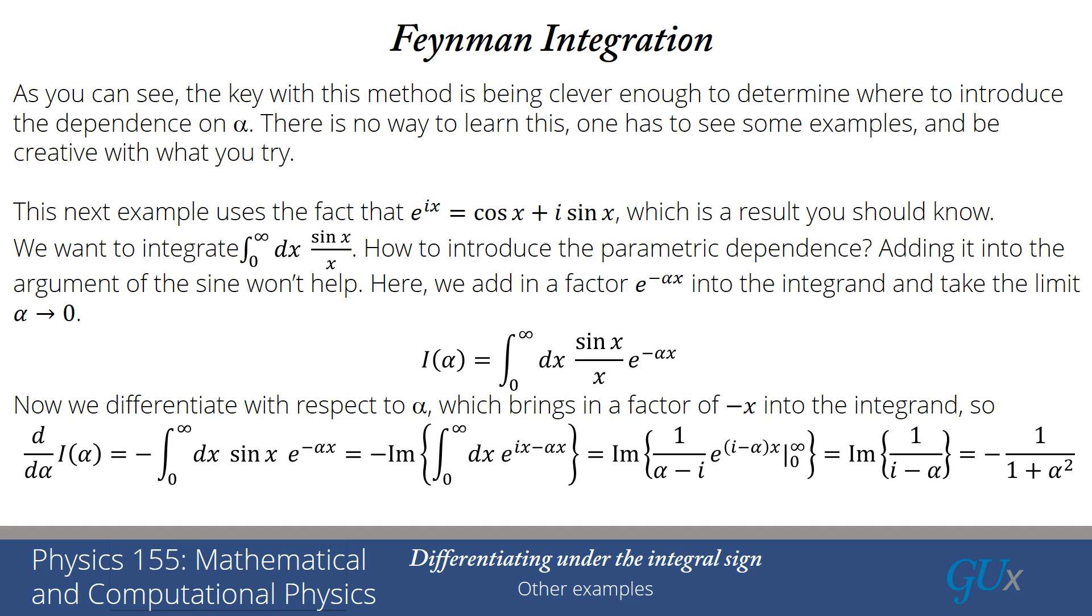Now I hope you remember how we rationalized the denominator of a complex number to determine what that imaginary part is. I have to multiply numerator and denominator by minus i minus alpha. And when I do that and then take the imaginary part of the final thing, I find that this imaginary part of 1 over i minus alpha is equal to minus 1 over 1 plus alpha squared. I hope you are able to do this algebra. If not, once again, Khan Academy videos on complex numbers will be helpful.